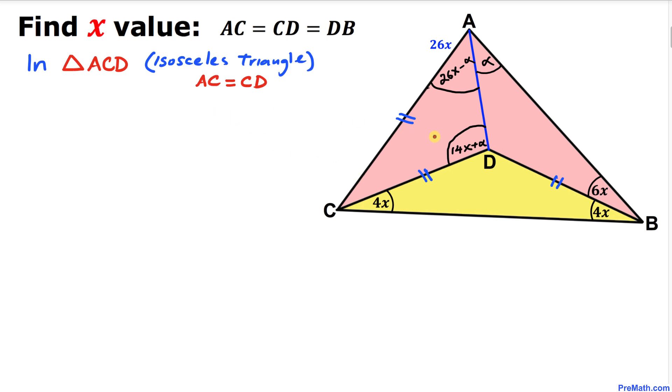And now let's focus on this triangle ACD and we know that this is an isosceles triangle since AC equal to CD. So that means this angle is going to be equal to this angle. So let's go ahead and equate those angles.